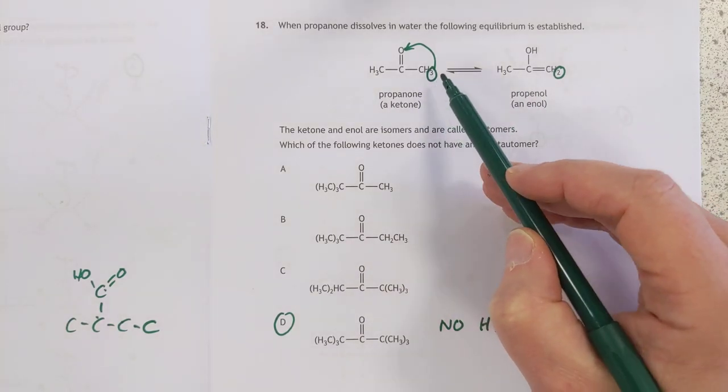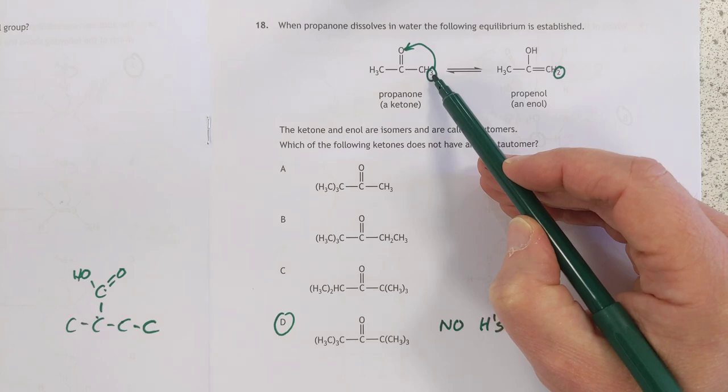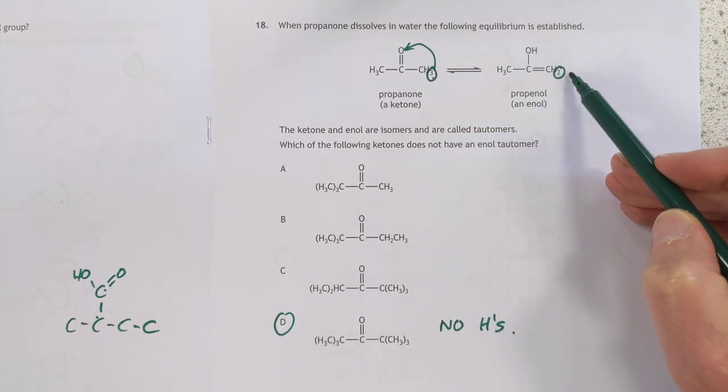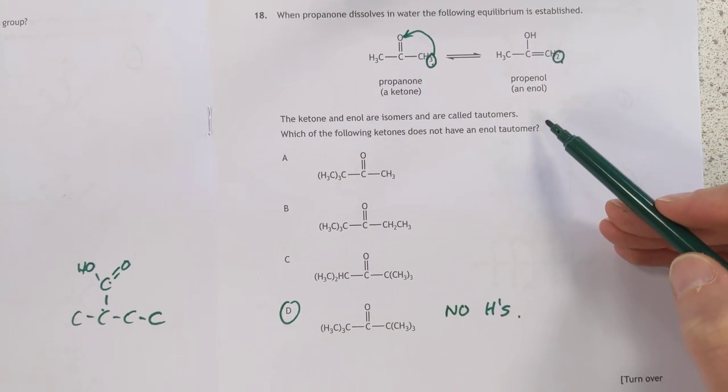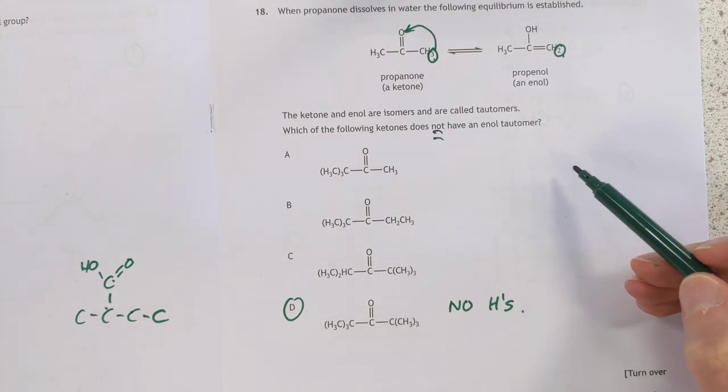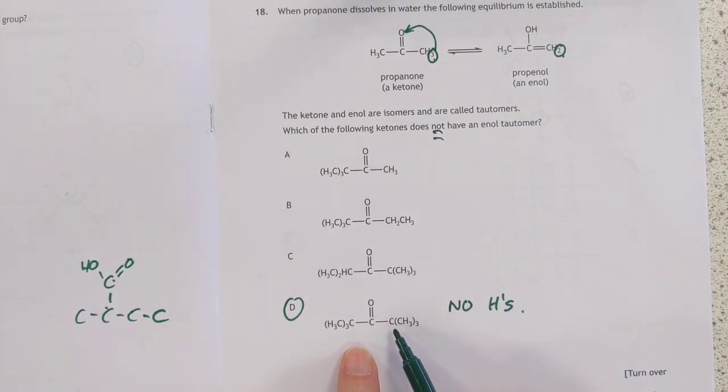Work out what's going on here. It's an equilibrium here. We've plucked off one of these H's, plonked onto there, and reduced that down to two. There's only one of these where you can't do that, and it's this one here, because there are no H's on either of these carbons.